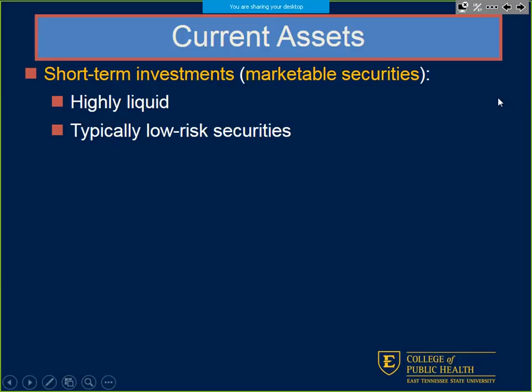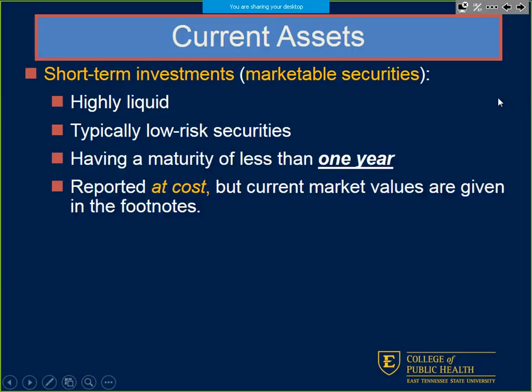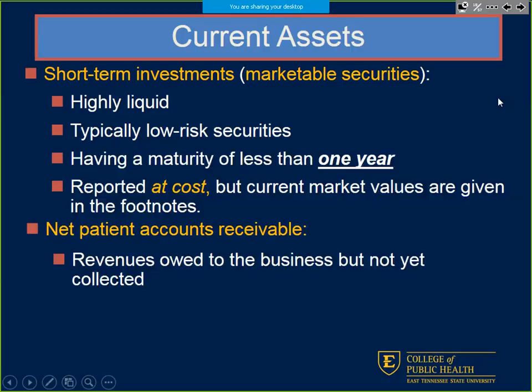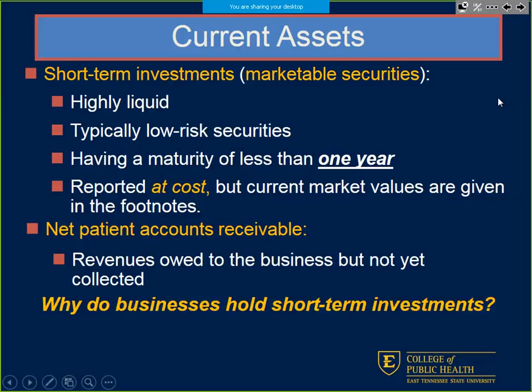Short-term investments — more like marketable securities — are highly liquid, right under cash, typically low risk, with maturity at less than a year. Long-term investments have a maturity of a year or more. Net patient accounts receivable — think back to Chapter 3 — these are revenues billed out but not yet received, held in accounts receivable while we're waiting on the money to come in.